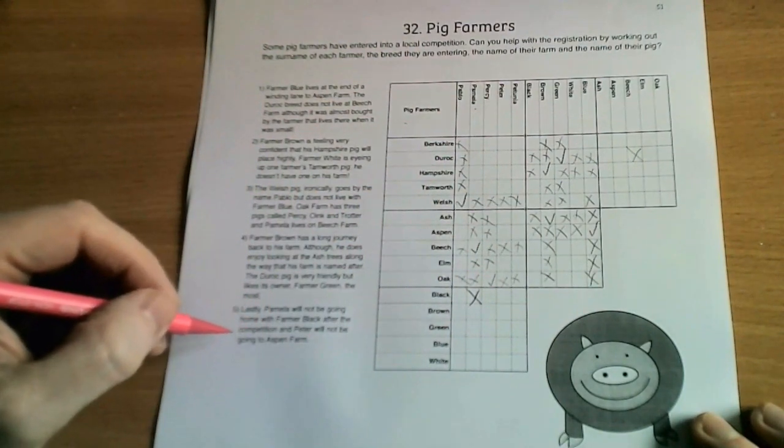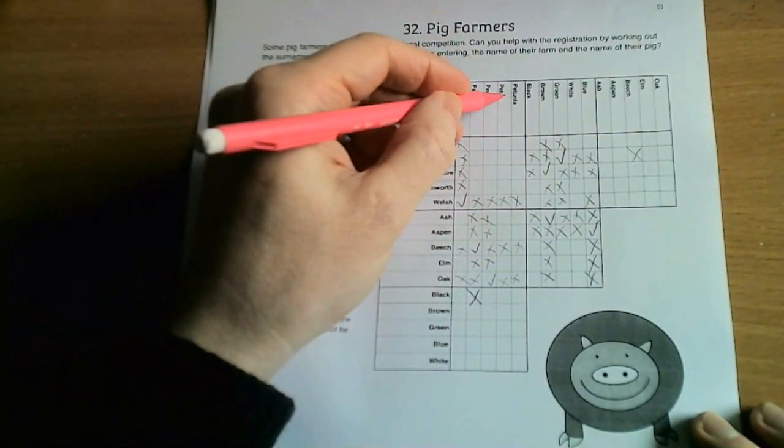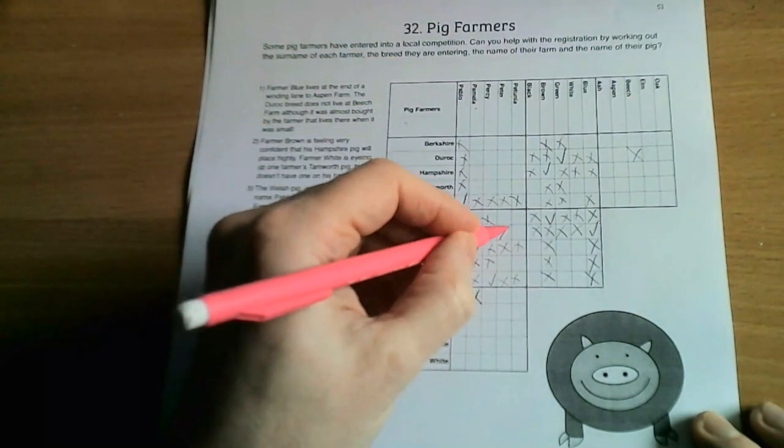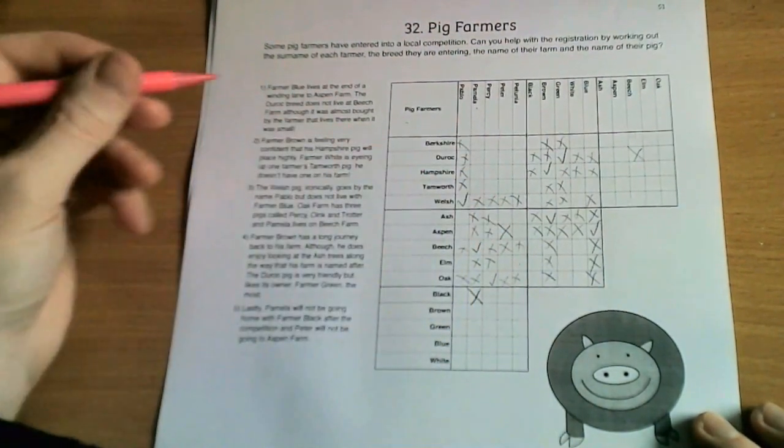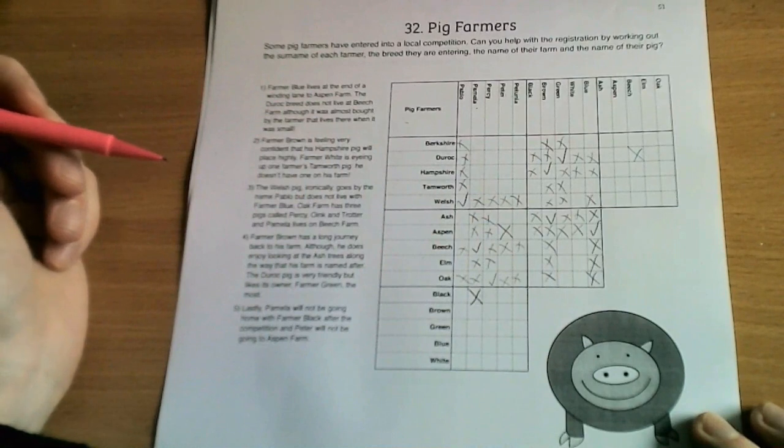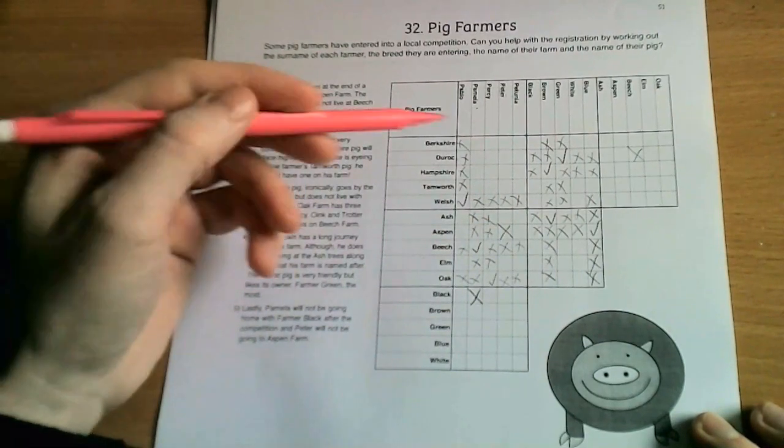And Peter will not be going to Aspen Farm, so wherever Peter is here and here's Aspen Farm, so they are not connected. Okay, so that's the initial stage and the simplest stage where we simply fill in with ticks and crosses the information that is given to us here.